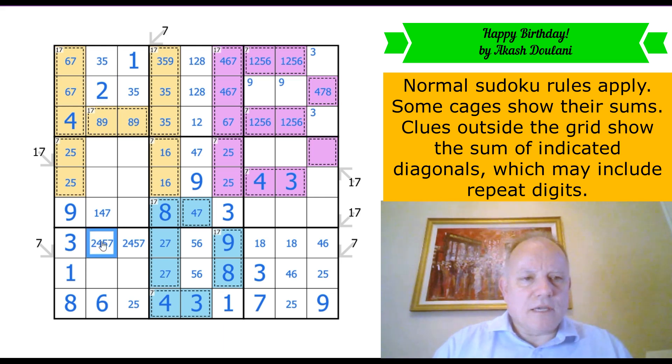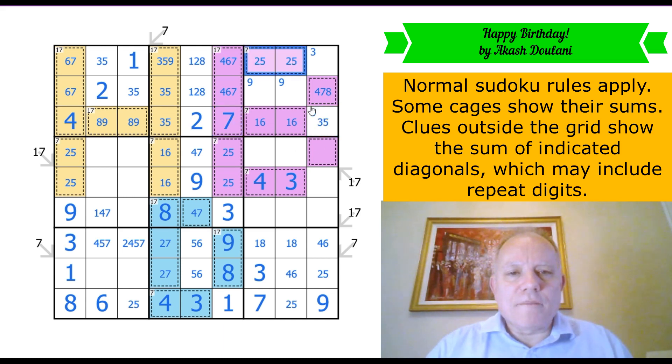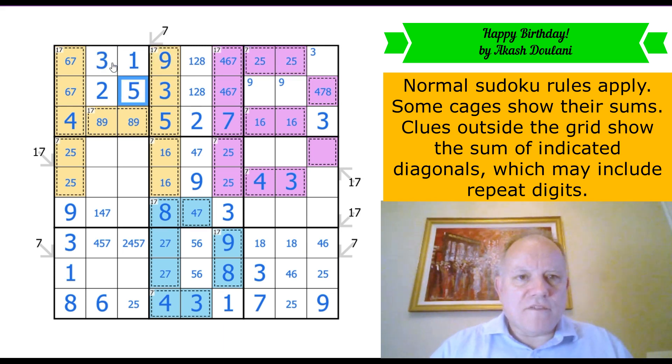1 there, 2 there. That probably does very little to fix... Oh, hang on. It fixes that cage as a 2, 5. That makes this one a 1, 6. This does loads. That can't be a 5 because we've got the 2, 5 pair. So we are suddenly getting numbers in the grid. 5 there. That fixes the 3, 5 pair.